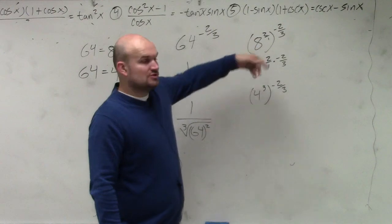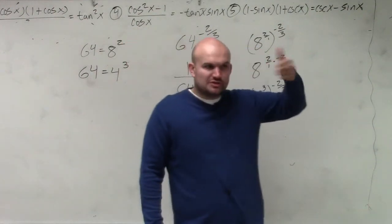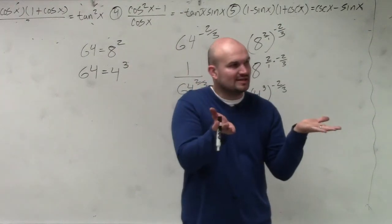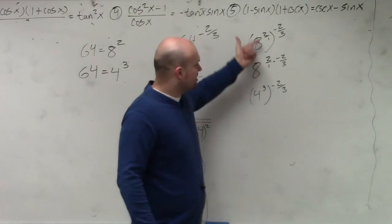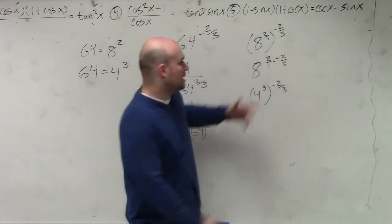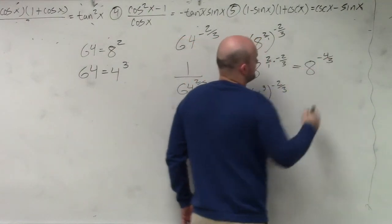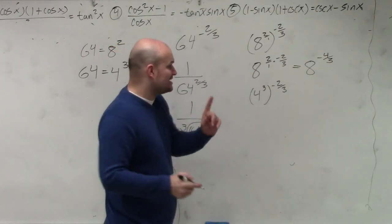So what I'm trying to tell you is there were two things you guys could have transformed it into. Well, the reason why I wrote both is because 8 squared doesn't really help your problem. It doesn't really help you fix this. This gives you negative 4 over 3. That's still not going to simplify the answer, but watch.